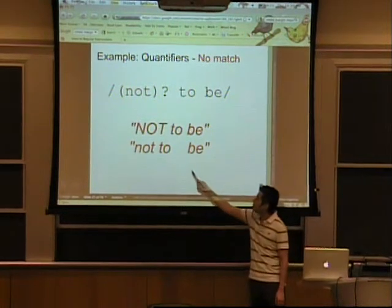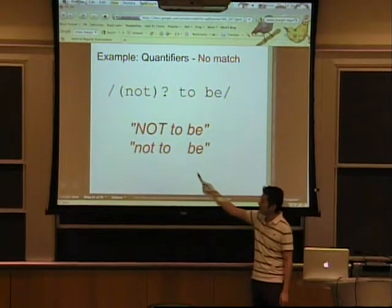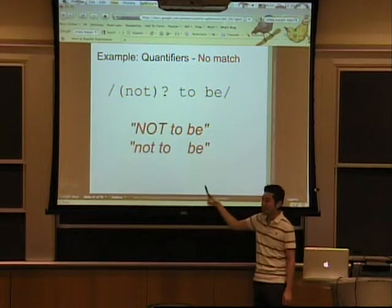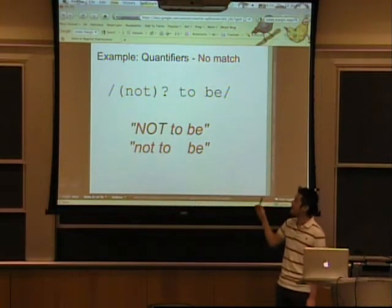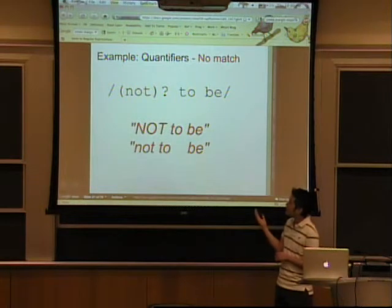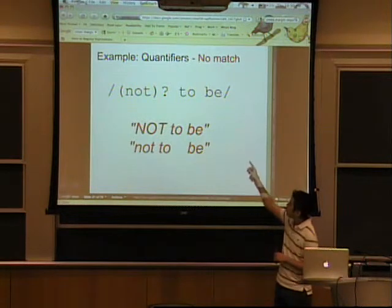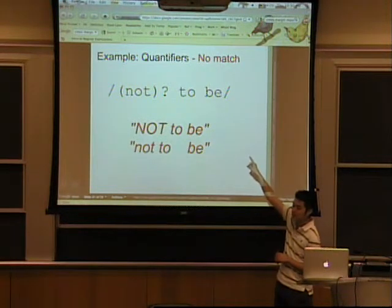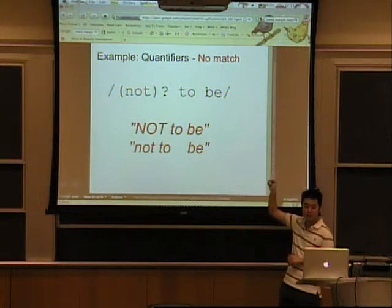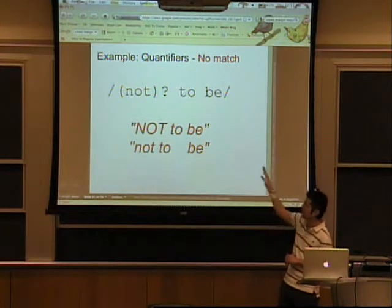Also, it doesn't match 'not to be' with two spaces or however many that is. You have to explicitly state how many spaces you'll accept. To solve that very simply, we could add a plus after that space.